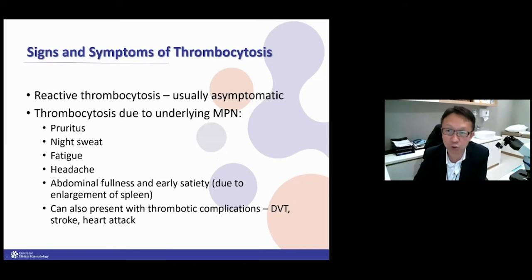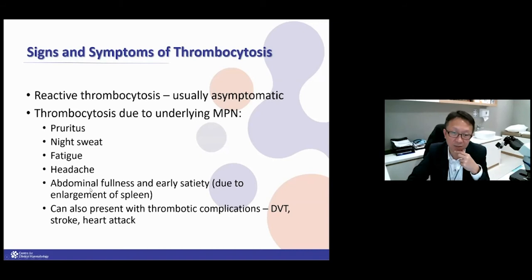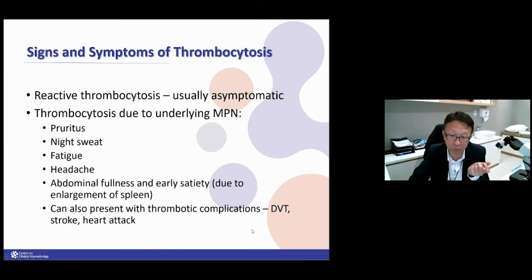In reactive thrombocytosis, patients are usually asymptomatic. In MPN-related thrombocytosis, patients have symptoms: pruritus — generalized itchiness — night sweats soaking through their clothing, fatigue, headache, and sometimes an enlarged spleen causing abdominal fullness and early satiety. The most problematic aspect is thrombosis — they can have DVT, stroke, or heart attack due to clotting, which can be fatal.